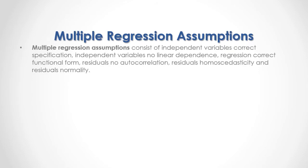Multiple regression assumptions consist of: independent variables correct specification, independent variables no linear dependence, regression correct functional form, residuals no autocorrelation, residuals homoscedasticity, and residuals normality.